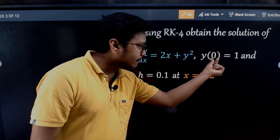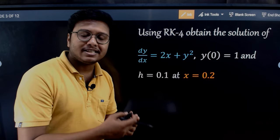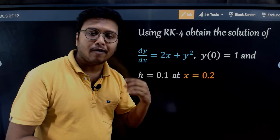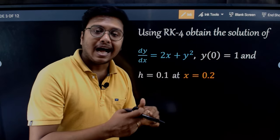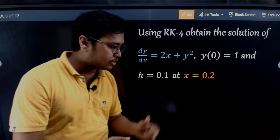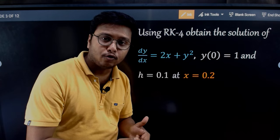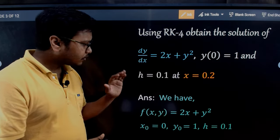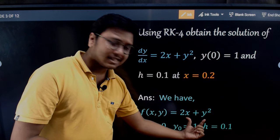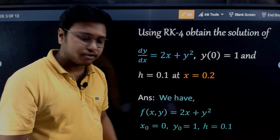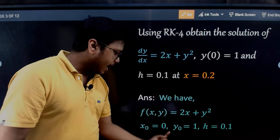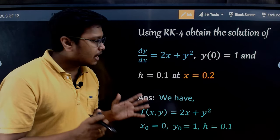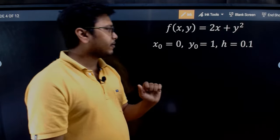In the first iteration, x gets incremented from 0 by the step length h, so x1 = x0 + h = 0 + 0.1 = 0.1. The first y value we obtain corresponds to x = 0.1. We then apply the formula again to get x = 0.2. The function f(x, y) = 2x + y², with x0 = 0, y0 = 1, and h = 0.1.